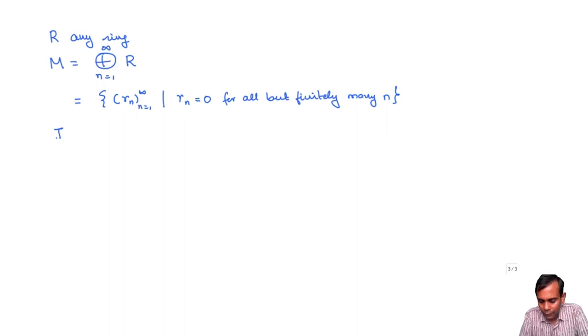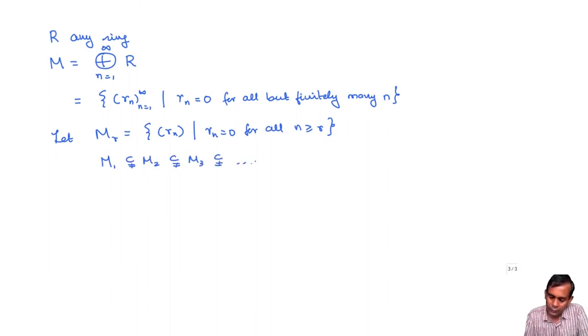Then inside M, you can look at M_r to be the submodule consisting of sequences R_n such that R_n equals 0 for all n greater than or equal to r. Then we have M1 is properly contained in M2, properly contained in M3, etc. So this is a strict ascending chain. Therefore, M is not a Noetherian R-module.